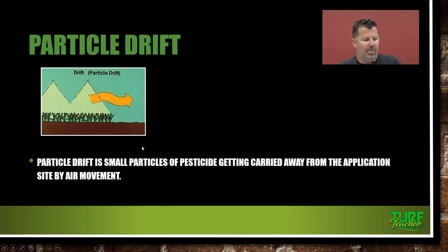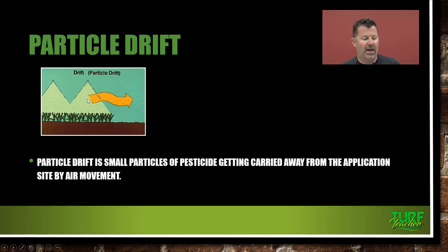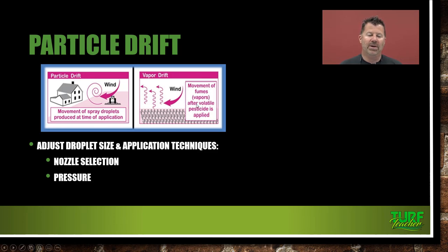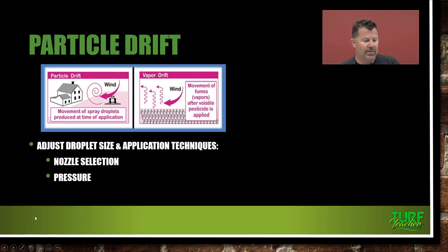Particle drift is small pesticide particles getting carried away from the application site by the movement of air. You can see in the diagram the application coming down on the turfgrass and the spray droplets being moved off by the wind. Adjust droplet size and application techniques — your nozzle selection and pressure will have a lot to do with that. Particle drift is the movement of spray droplets produced at the time of application. Vapor drift is the movement of fumes or vapors after a volatile pesticide is applied — it turns into a gas and moves off-site by the wind.